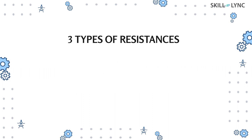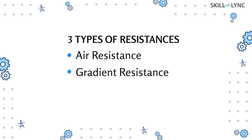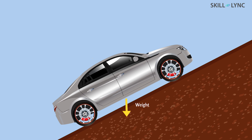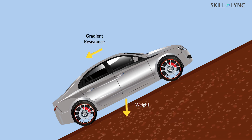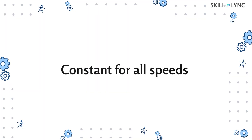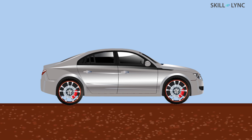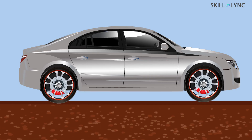A moving vehicle should overcome three major types of resistances. The resistances to the motion of the vehicle are air resistance, gradient resistance, and rolling resistance. Gradient resistance occurs due to the weight of the vehicle — it acts parallel to the surface of the road and is constant for all speeds. Rolling resistance occurs between the wheels and the road and depends on the vehicle speed and the road and tire characteristics.